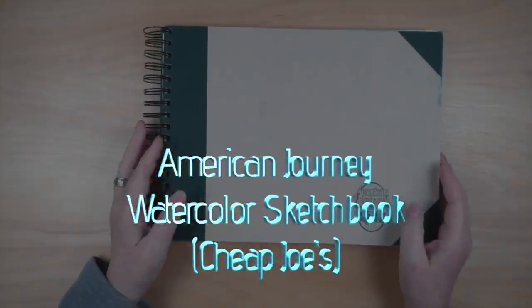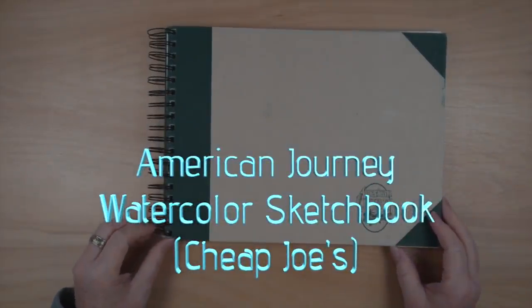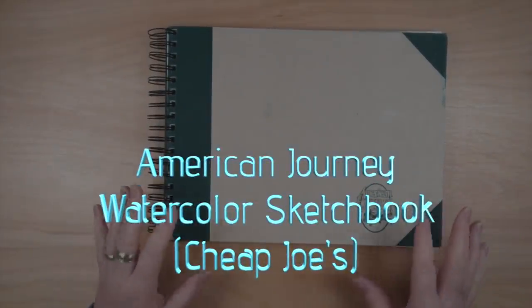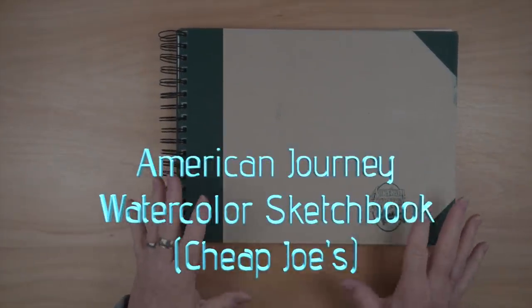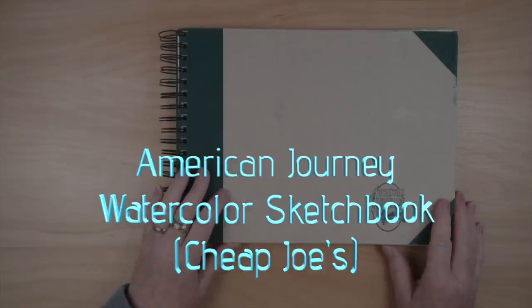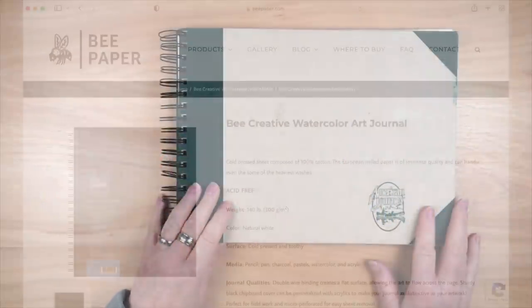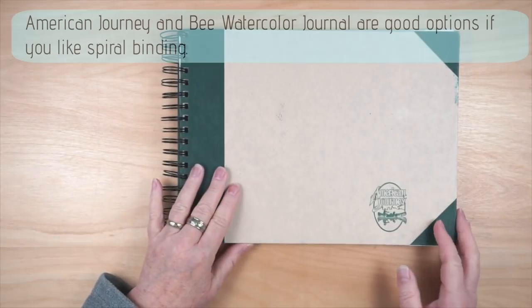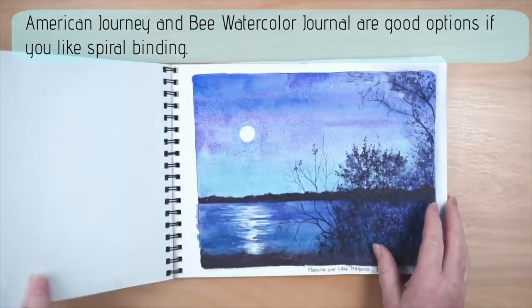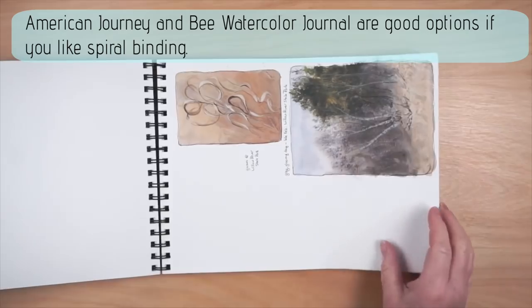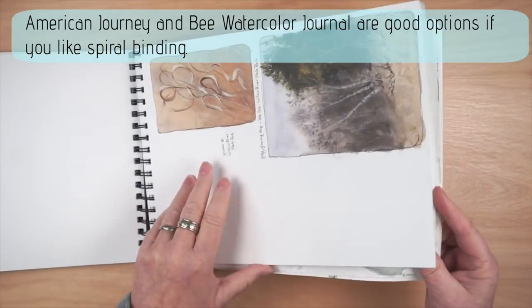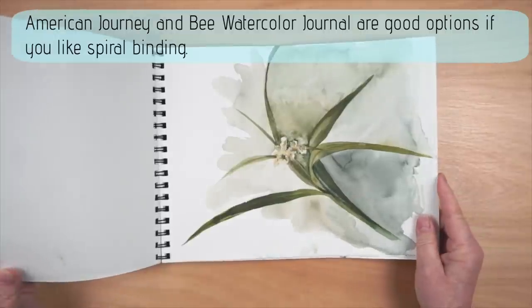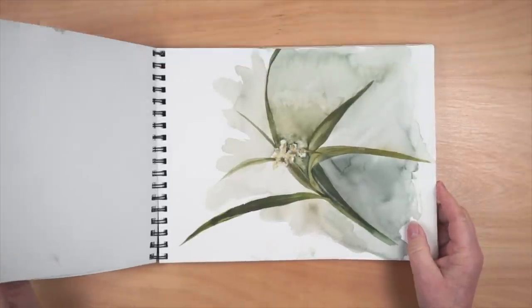Next up is the American Journey sketchbook from Cheap Joe's. And a very similar product that I unfortunately don't have one to show you because the product's changed a little since I bought it last time, is the Bee Paper watercolor sketchbook. So if you're looking for a spiral bound sketchbook, those are two good options. Again, the paper is a bit more like a student-grade paper, doesn't necessarily take the washes as well as your studio paper.